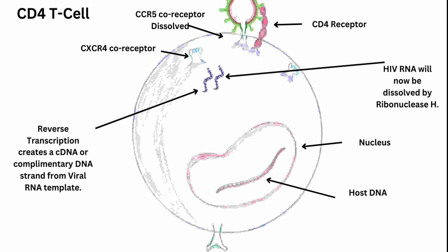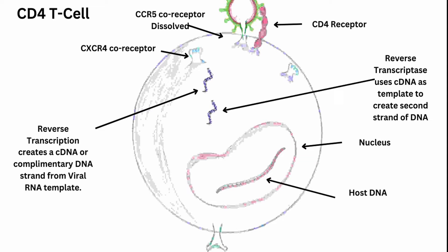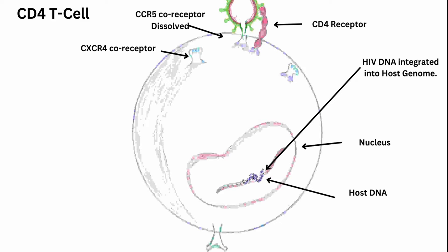Now the HIV RNA is inside the CD4T cell — it uses reverse transcriptase to create a complementary copy of itself, which is called a DNA strand. So the RNA was a template to create a DNA strand. This DNA strand has been created, and the original HIV RNA is going to be dissolved by ribonuclease H. In the end, only one DNA strand will remain. A DNA strand cannot remain alone — a DNA has to have a pair. So the reverse transcriptase uses the original DNA strand as a template and creates a complementary DNA strand. Once the two are attached, they become HIV DNA and enter the nucleus and get integrated into the host DNA.